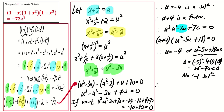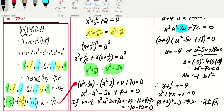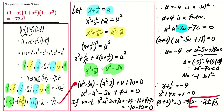Hence u equals negative 4 is the only real solution for the cubic in u. Since u equals x plus 1 over x, we have x plus 1 over x equals negative 4, meaning x squared plus 4x plus 1 equals 0, which means (x plus 2) squared equals 3. Therefore x equals negative 2 plus or minus the square root of 3. After checking, both answers are acceptable, so the final answer is x equals negative 2 plus or minus the square root of 3.